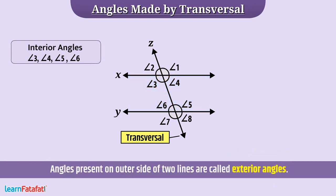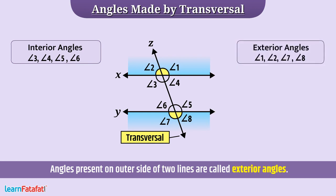Similarly, angles present on the outer side of the two lines are called exterior angles. Here, angle 1, angle 2, angle 7, and angle 8 are exterior angles.